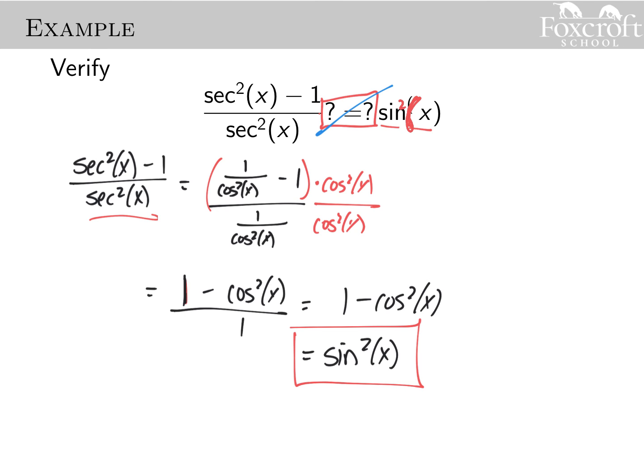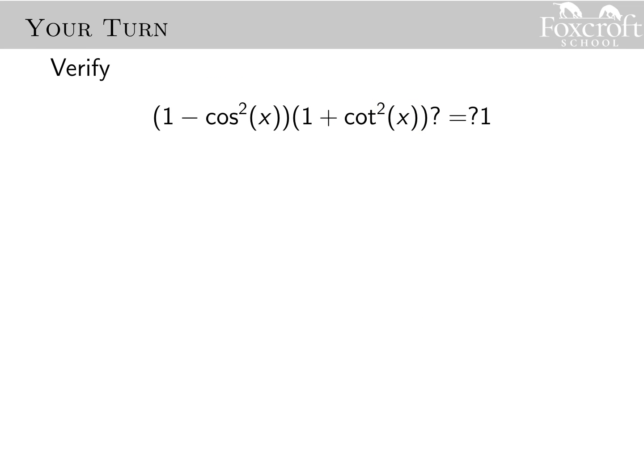In general for all these examples I started on the left and simplified to get to the right — that's not always going to be the case. Start on the more complicated side: something with a fraction is going to be more complicated than a single trig function. For your turn, go ahead and try to verify that this left-hand side is equal to one. One is pretty simple, so you're probably going to start on the left and see if you can simplify it down to one.